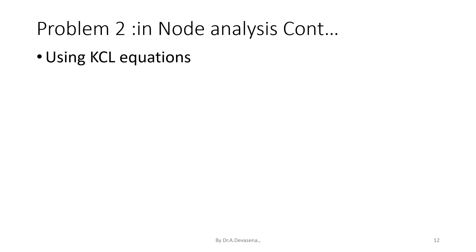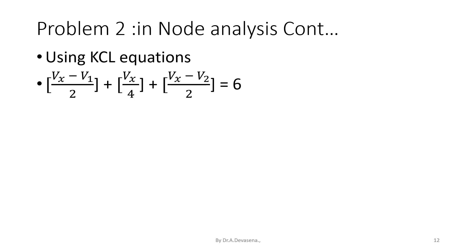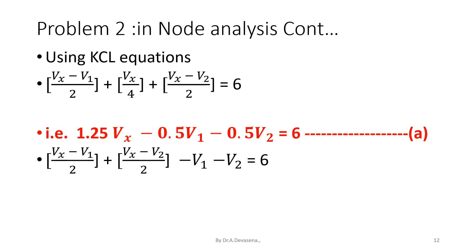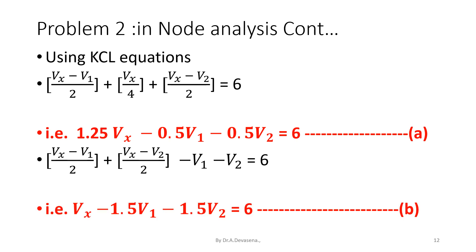Using the KCL equations: Vx minus V1 divided by 2, plus Vx divided by 4, plus Vx minus V2 divided by 2, that is equal to 6. That is, 1.25Vx minus 0.5V1 minus 0.5V2 is equal to 6. Consider this as equation A. Also, Vx minus 1.5V1 minus 1.5V2 is equal to 6. Consider this as equation B.